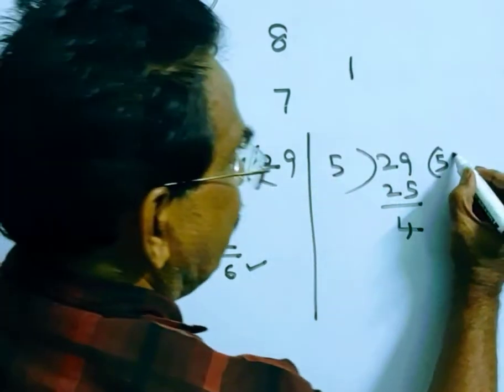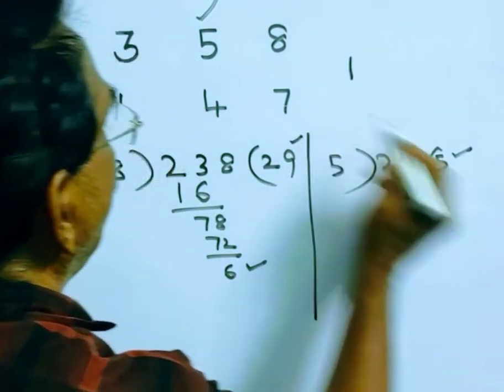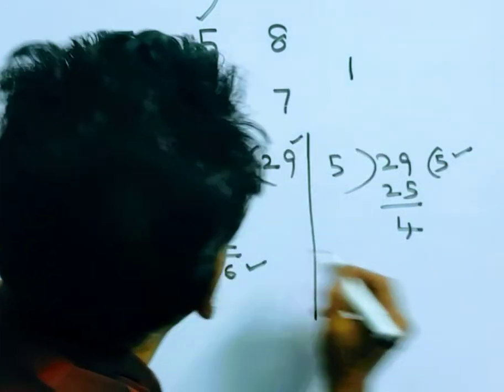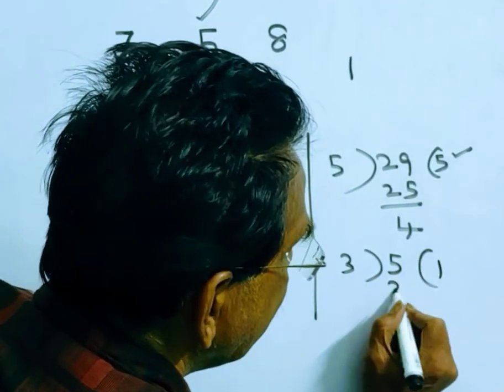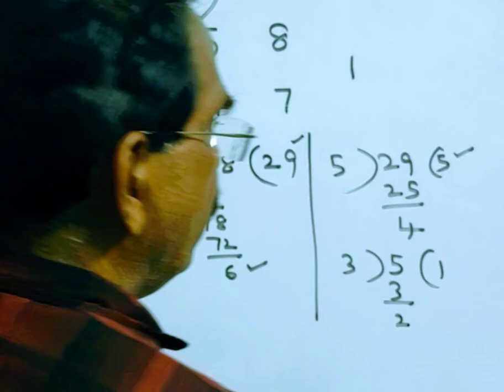Now let us divide this 5 by the divisor 3. On dividing 5 by 3, the remainder is 2.